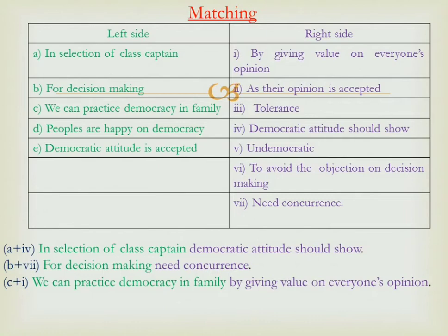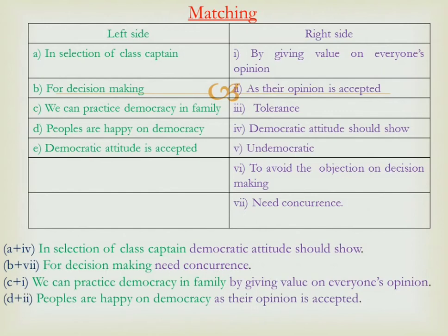Number D: 'people are happy on democracy.' So what can be the reason that people are happy? Looking at remaining options: 'as their opinion is accepted' — this can be it. 'Tolerance' — people are happy on democracy for tolerance? No. Number four is already used. 'Undemocratic' — no. 'To avoid the objection on decision making' — no, this couldn't be the result. So D matches with number 2: 'people are happy on democracy as their opinion is accepted.'